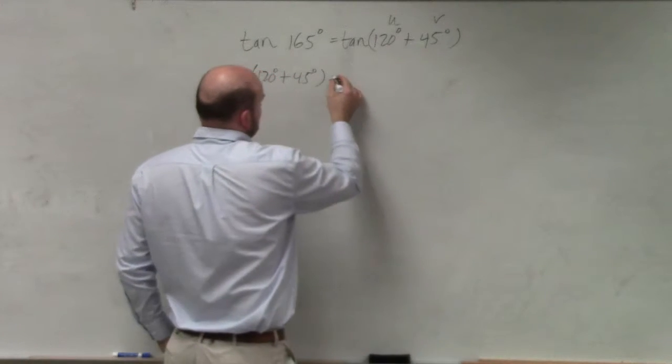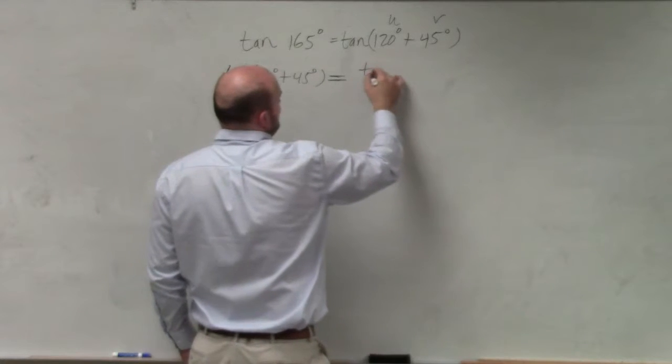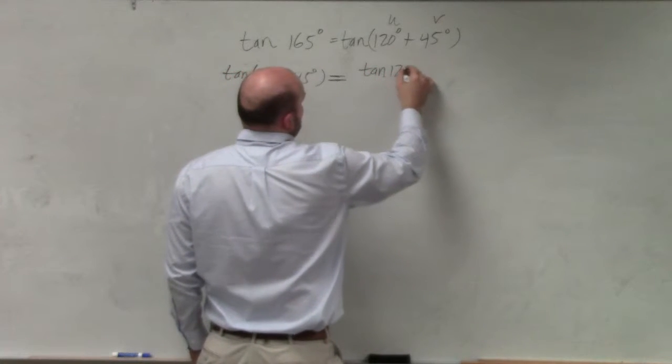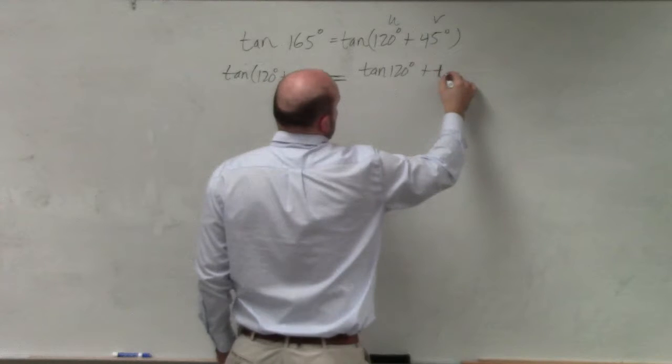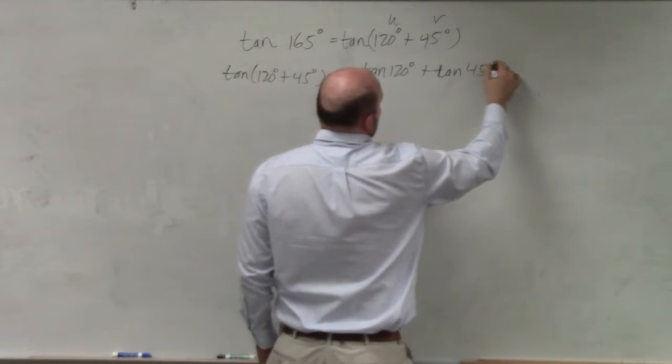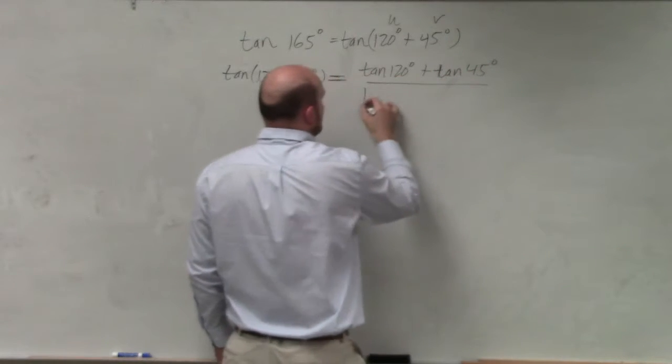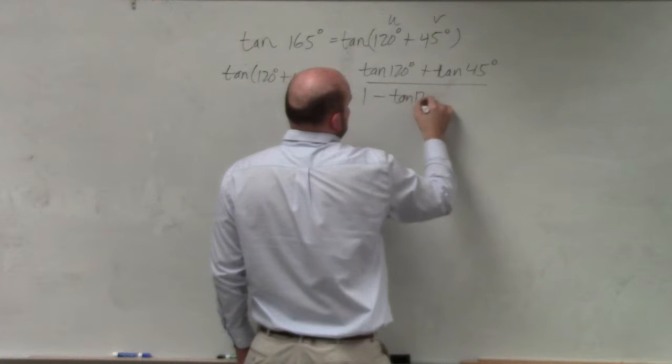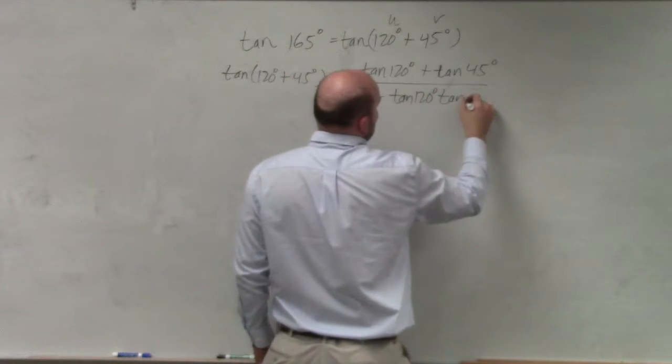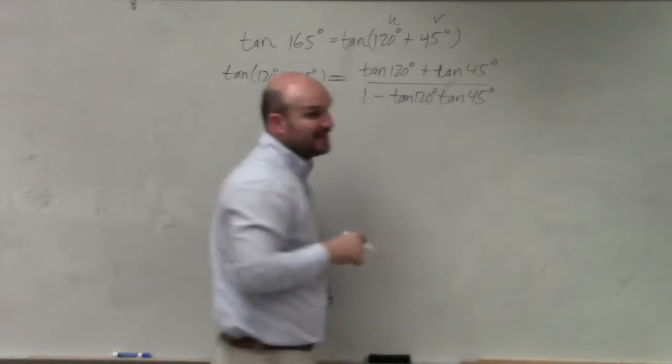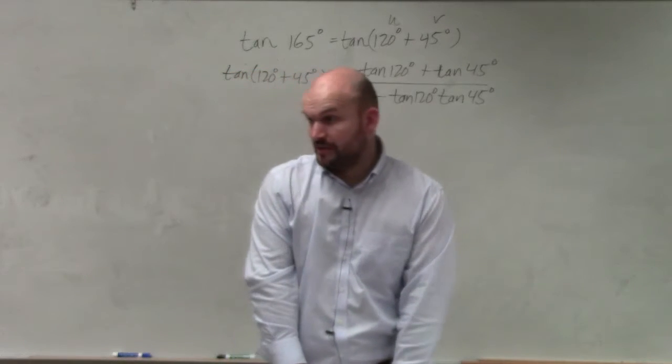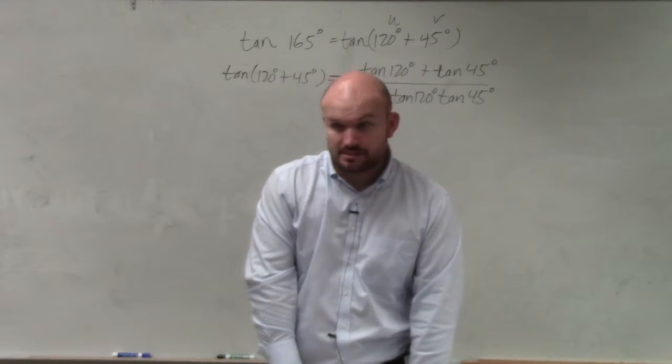let's see, it's going to be tangent of 120 degrees plus tangent of 45 degrees all over 1 minus tangent of 120 degrees times the tangent of 45 degrees. That is based on my formula sheet. Does everybody agree with me? Yes? OK.